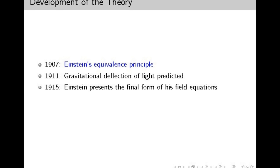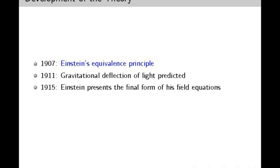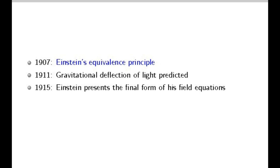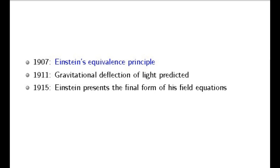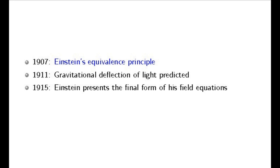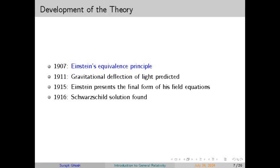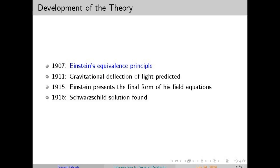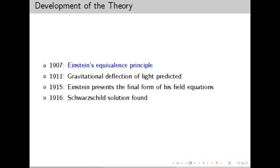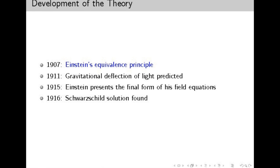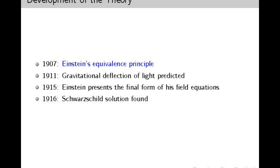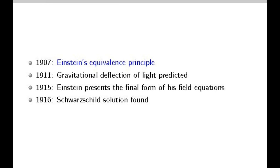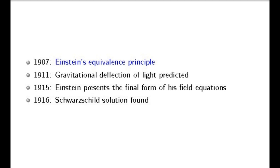At the heart of general relativity are equations that describe how matter and energy influence the shape of spacetime. These equations fundamentally connect the geometry of the universe to the presence of mass and energy. Imagine spacetime as a flexible, multidimensional fabric that can be stretched and warped by the presence of massive objects, similar to how a heavy ball placed on a rubber sheet causes it to curve. The way this fabric bends and curves is described by the metric tensor — a mathematical object that provides a way to measure distances and angles in our curved, four-dimensional universe.